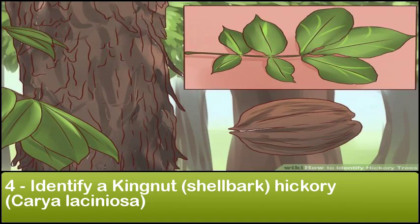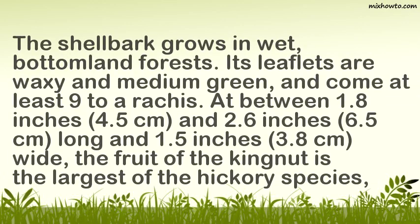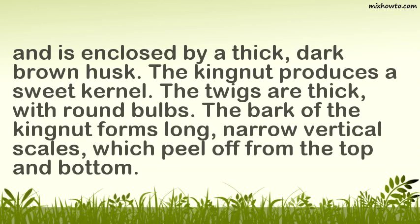Step 4: Identify a Kingnut or Shellbark Hickory (Carya laciniosa). The shellbark grows in wet, bottomland forests. Its leaflets are waxy and medium green, and come at least 9 to a rachis, at between 1.8 inches (4.5 cm) and 2.6 inches (6.5 cm) long and 1.5 inches (3.8 cm) wide. The fruit of the kingnut is the largest of the hickory species and is enclosed by a thick, dark brown husk. The kingnut produces a sweet kernel. The twigs are thick with round bulbs. The bark of the kingnut forms long, narrow vertical scales which peel off from the top and bottom.